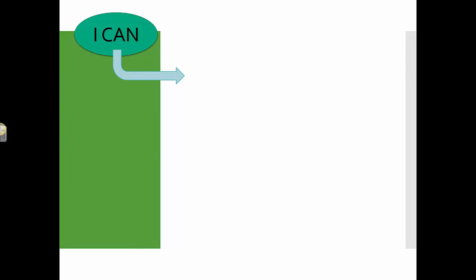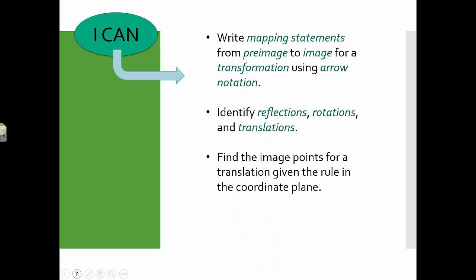By the end of this lesson, you'll be able to say, I can write mapping statements from pre-images to images for a transformation using arrow notation, identify reflections, rotations, and translations, and find the image points for a translation given the rule in the coordinate plane.